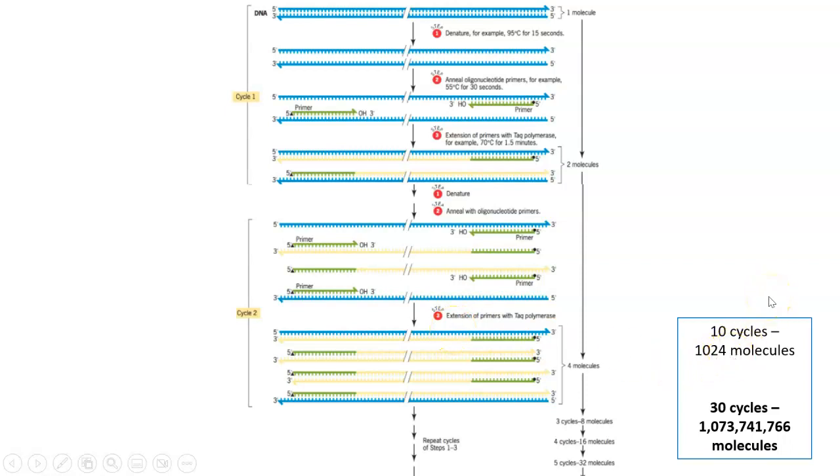After 10 cycles, you have around 1,000 pieces of your DNA of interest, that specific sequence you wanted to amplify. But by the time we hit 30 cycles of denaturation, annealing, and extension, you have over 1 billion pieces of that specific DNA you're interested in amplifying, which you can then do a lot of things with subsequently, including cloning or DNA sequencing, depending on what the goal of your experiments are.